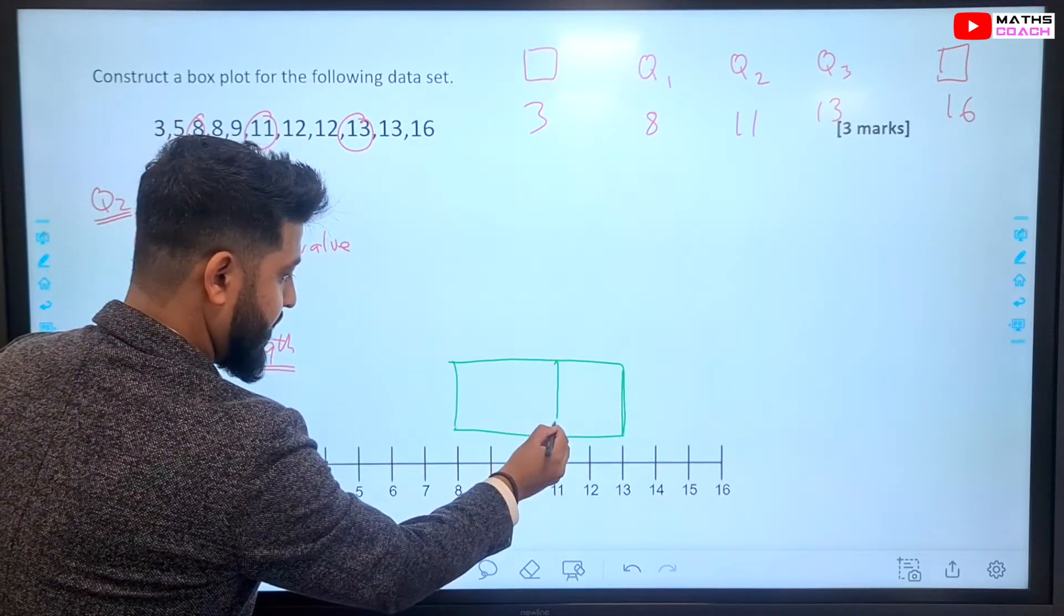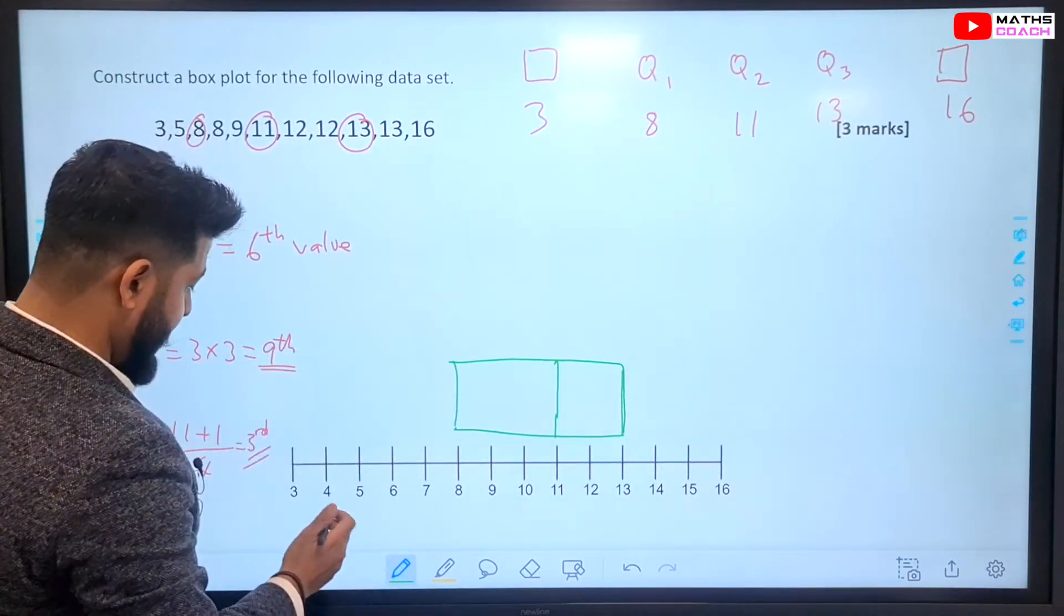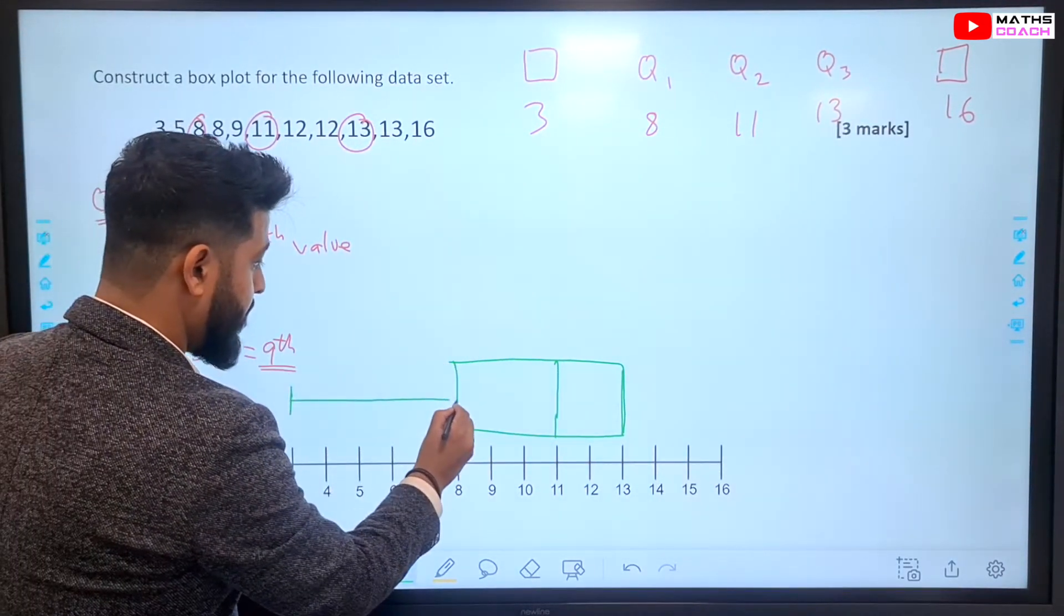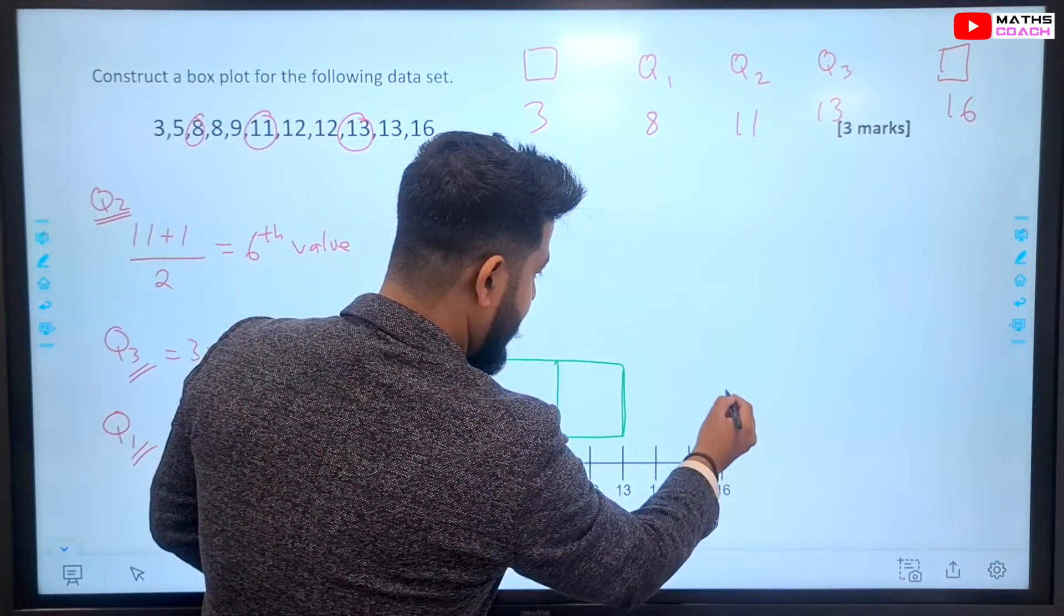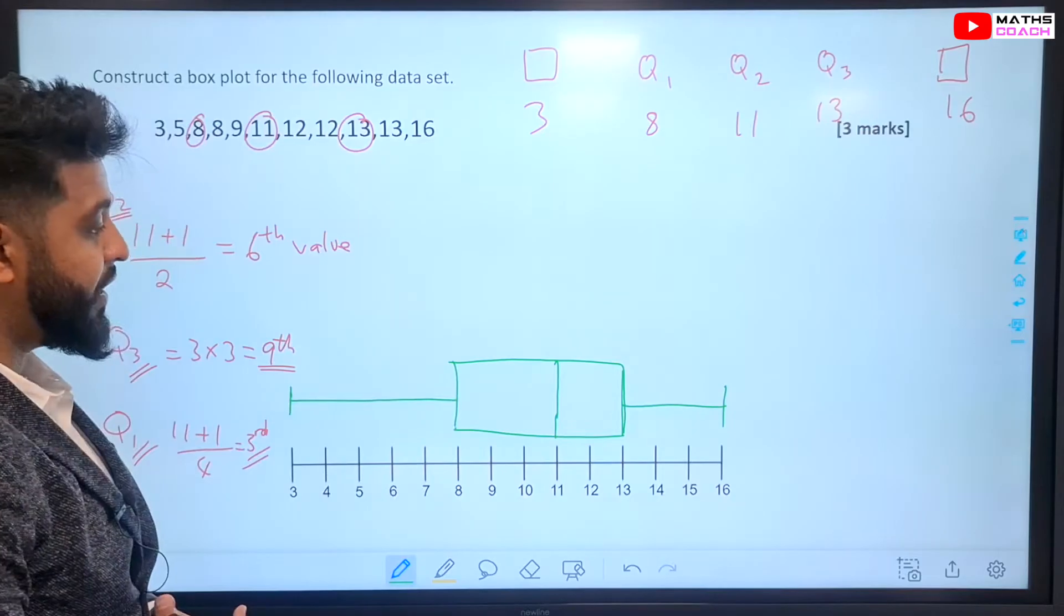And that completes, let's just add that on, that completes our box. And then, 3 is the lowest value, and 16 is our highest value. And we have our completed box plot.